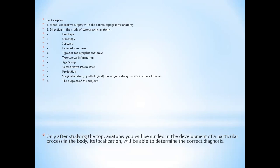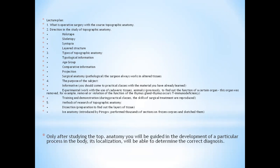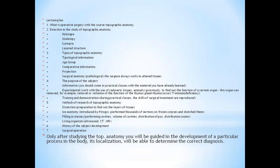Our plan is: what is operative surgery with the course topographical anatomy. Directions in the study of topographic anatomy: holotopy, skeletopy, syntopia, layered structure, types of topographic anatomy, topological information, age group, competitive information, projection, and surgical anatomy. The purpose of the subject is informative, experimental training and demonstration. The methods of research of topographical anatomy: dissection, ice anatomy, filling in the masses, living organism, history of the subject development and surgical operation. Only after studying topographic anatomy, you will be guided to the development of particular processes in the body. Its localization will be able to determine the correct diagnosis.